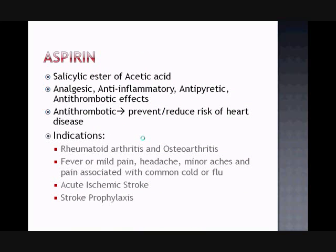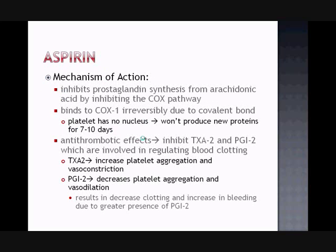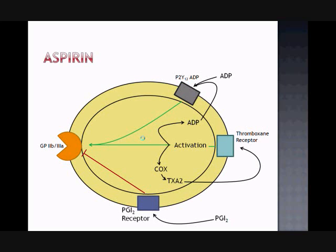Aspirin is a salicylic ester of acetic acid used for many indications due to its wide range of effects. As an antithrombotic it is used to prevent and reduce the risk of heart disease. It achieves this by inhibiting the synthesis of the prostaglandins from arachidonic acid in the COX pathway. Aspirin bonds irreversibly to COX1, and therefore TXA2 and PGI2 cannot be synthesized.